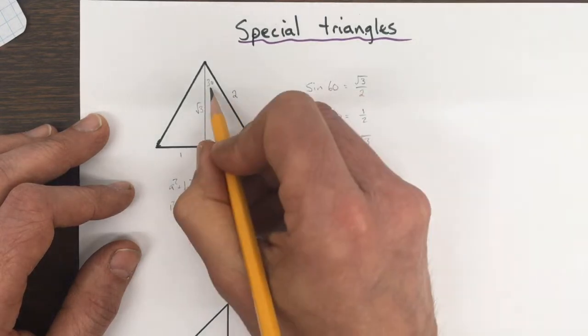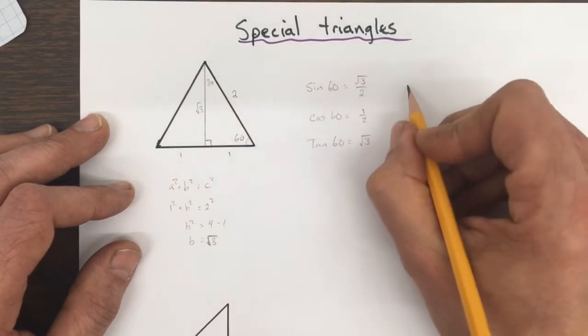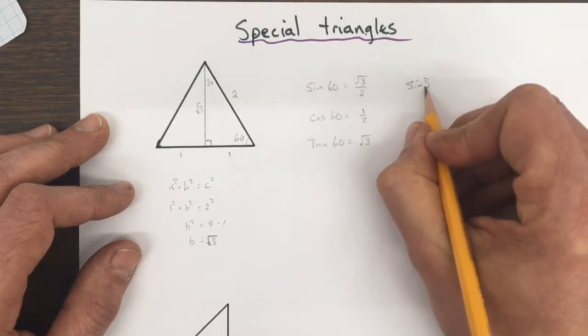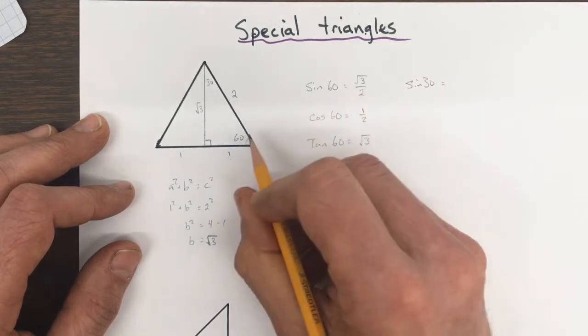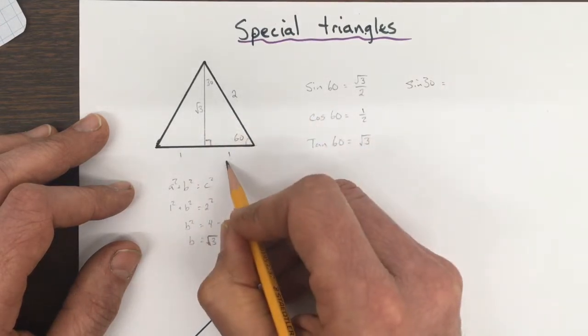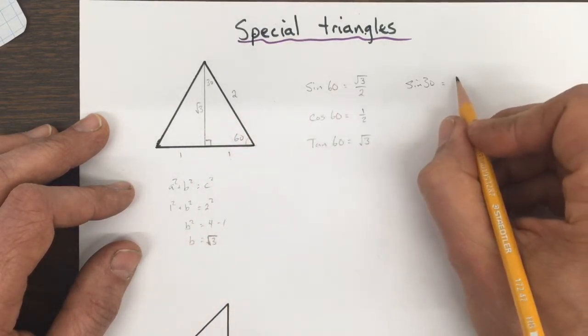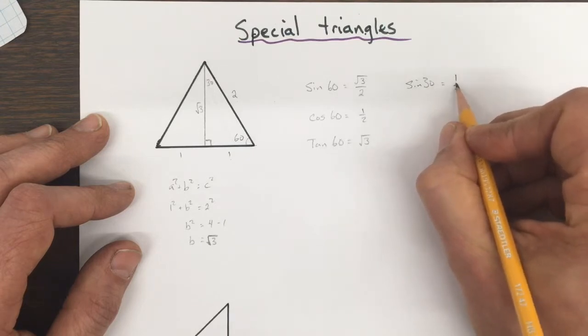If we look at the other angle, 30, we've got the sine of 30 equal to opposite over hypotenuse, so one half.